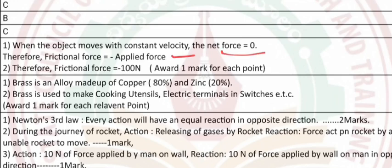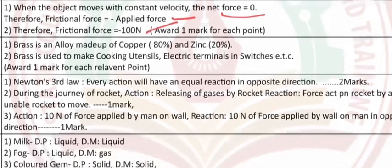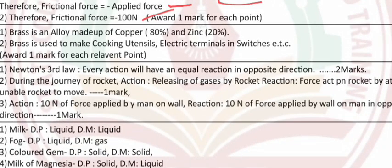Question 17: Brass is an alloy made up of copper 80% and zinc 20%. Brass is used to make cooking utensils, electrical terminals, switches, etc.